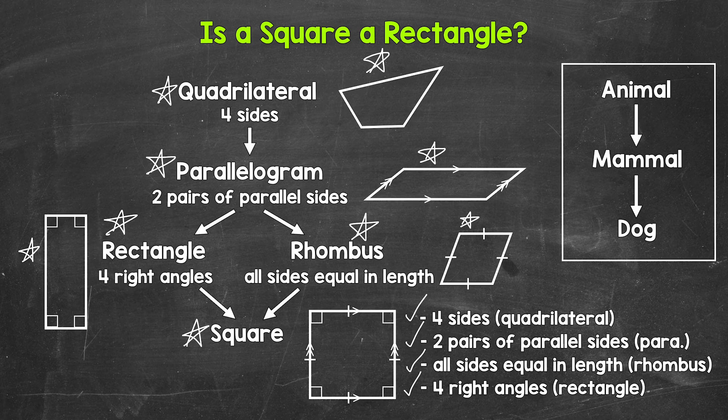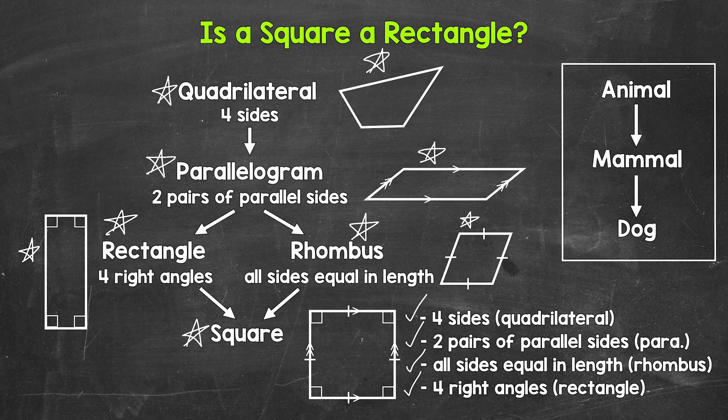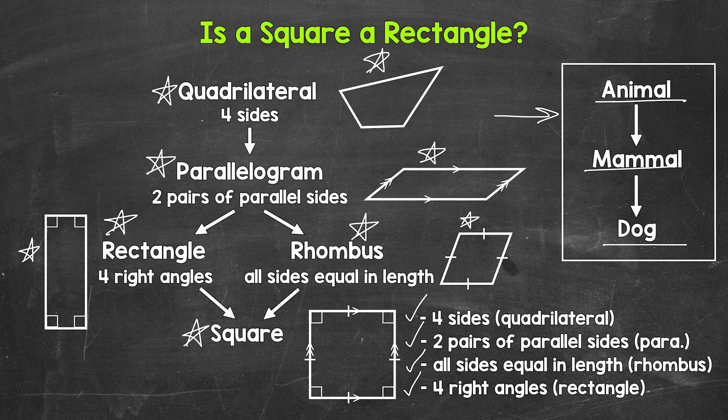Now, to help us make sense of all of this and relate this to something that could help us understand this a little better, off to the side, I have animal, mammal, and dog. So we start with animal. More specifically, we move to mammal. And then even more specific than that, we move to dog. A dog is an animal. A dog is a mammal. But more specifically, a dog is a dog.